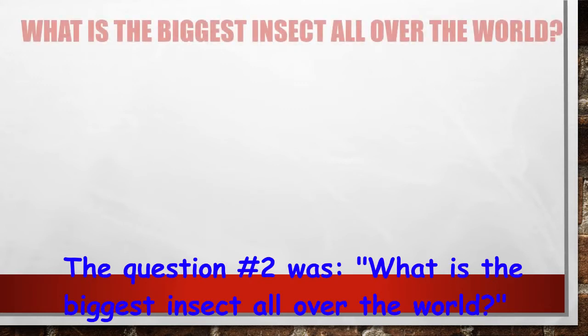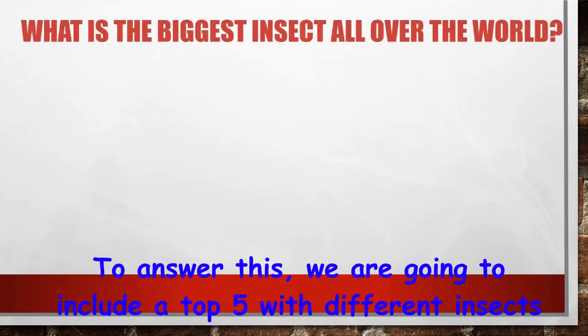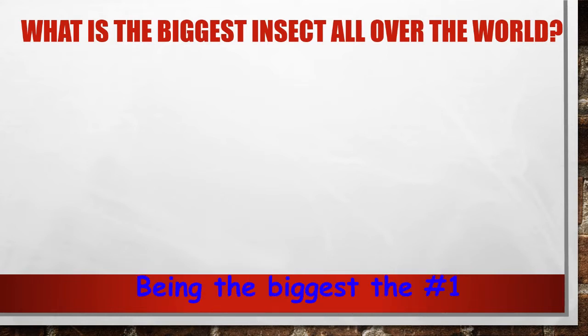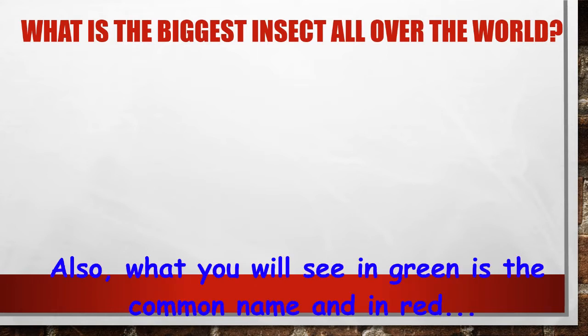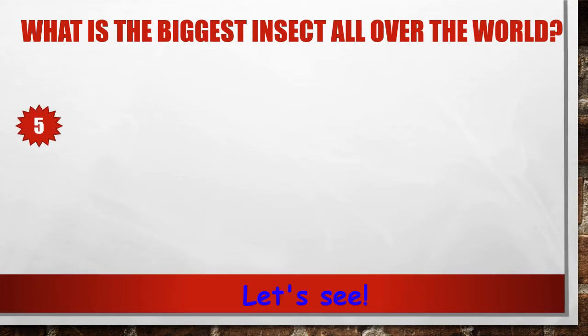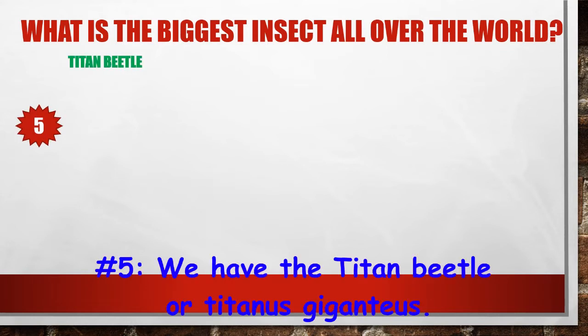Question number two was: what is the biggest insect in the world? To answer this, we are going to look at a top five list of different insects, going from number five to number one — number one being the biggest. What you will see in green is the common name and in red is the scientific name.